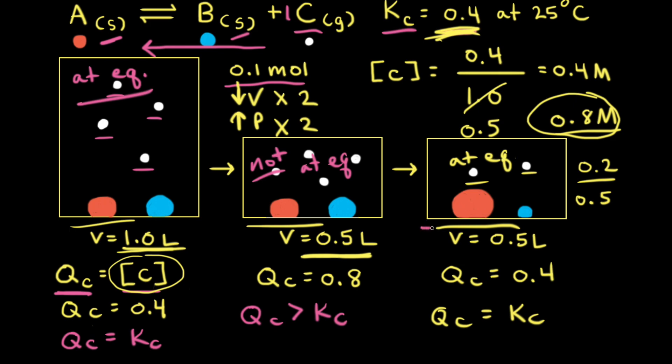Since the reaction is at equilibrium in the third particulate diagram, the net reaction stops going to the left and the concentration of C remains constant.